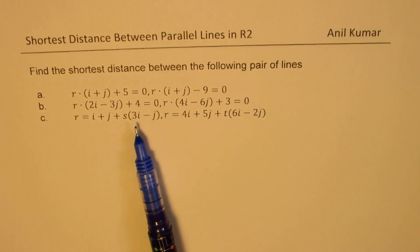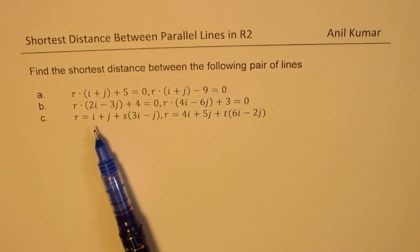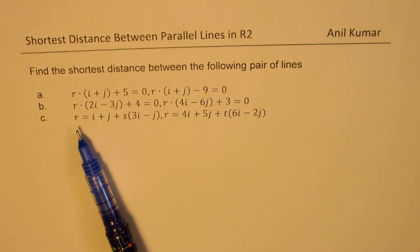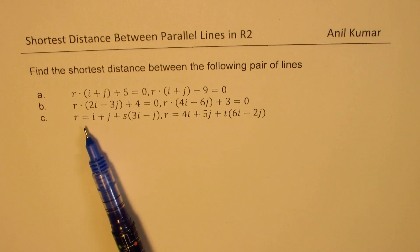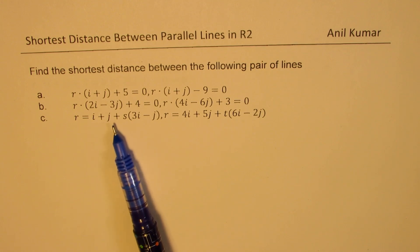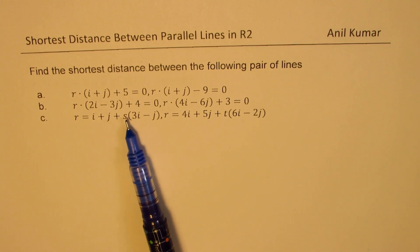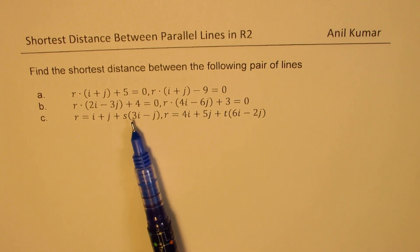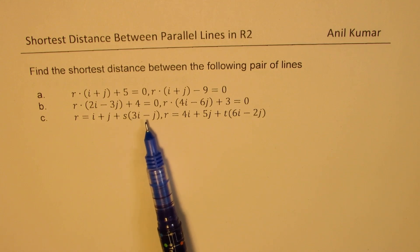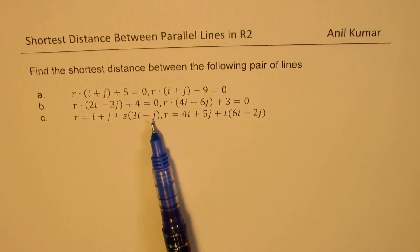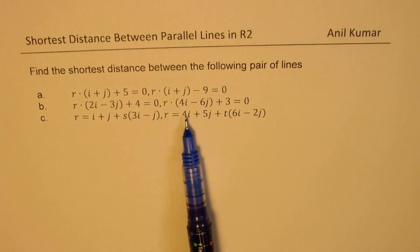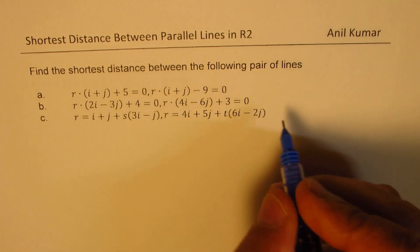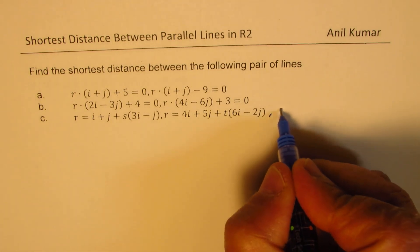And the last example, we are given the vector equation: r equals i plus j plus s times (3i minus j), and r equals another expression, where s and t belong to real numbers.